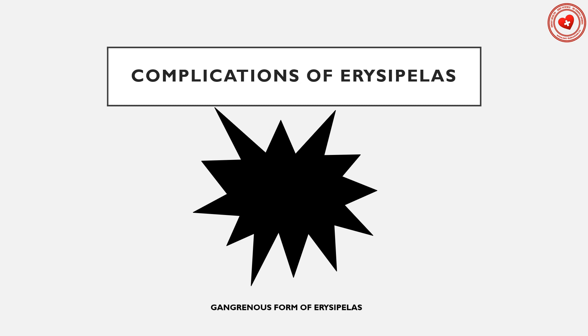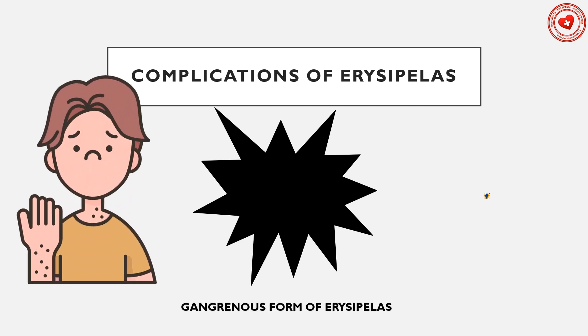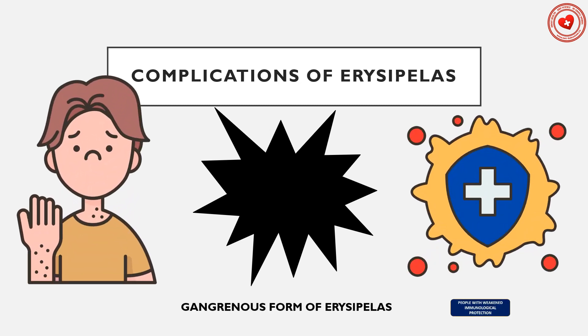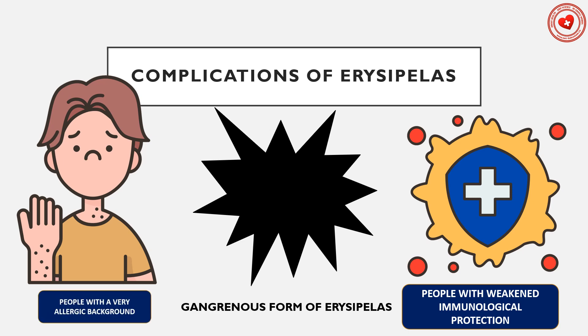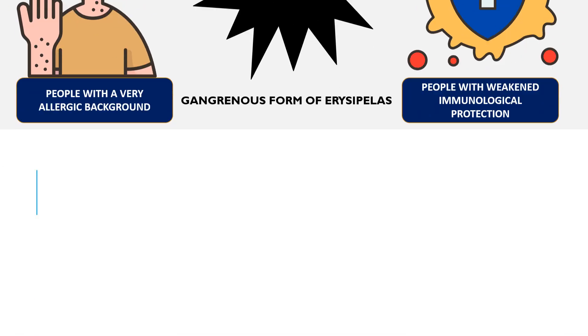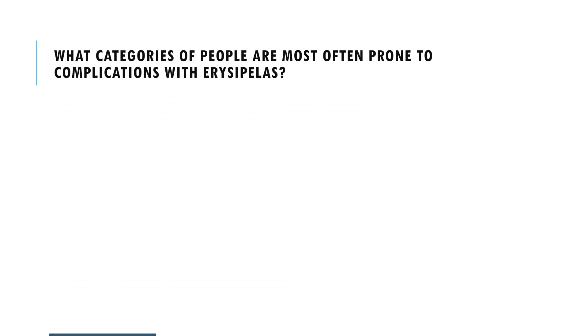Complications of erysipelas. The most dangerous form, gangrenous erysipelas, usually develops in people with weakened immunological protection or with a pronounced allergic background.